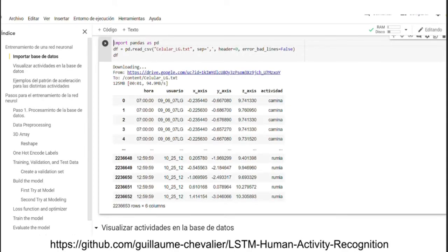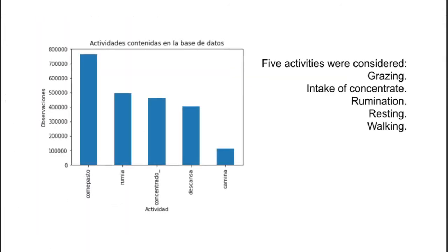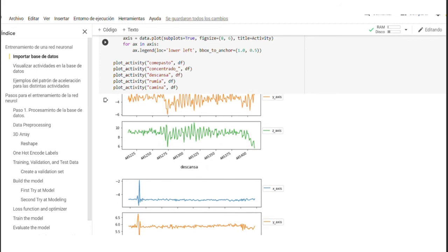First, we need to import the database. Remember that each line in the text file must contain the three accelerometer values and their respective activity. Five activities were considered in our work: grazing, intake of concentrate, rumination, resting, and walking. As we can see, each activity has its own patterns of accelerometer values.